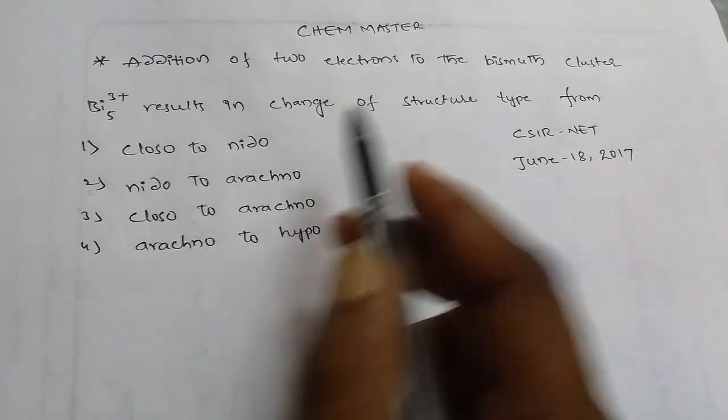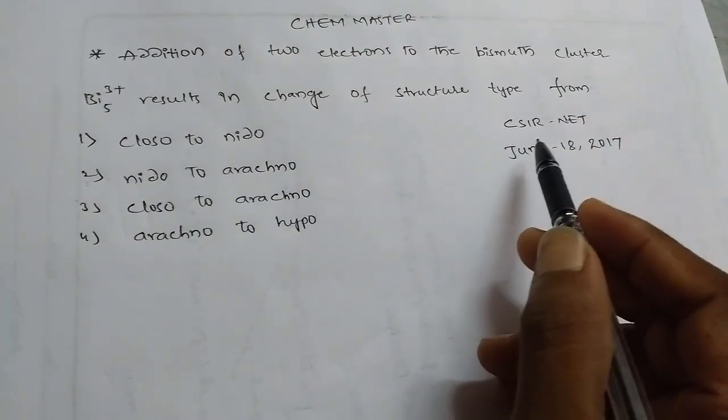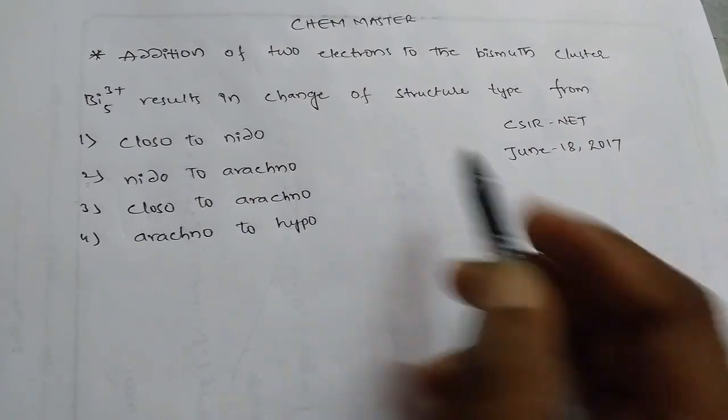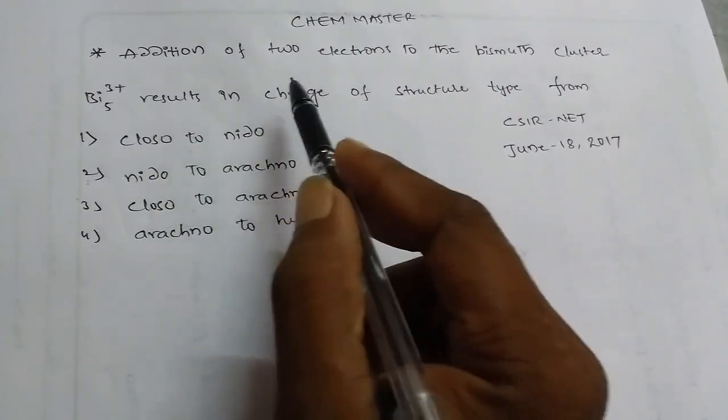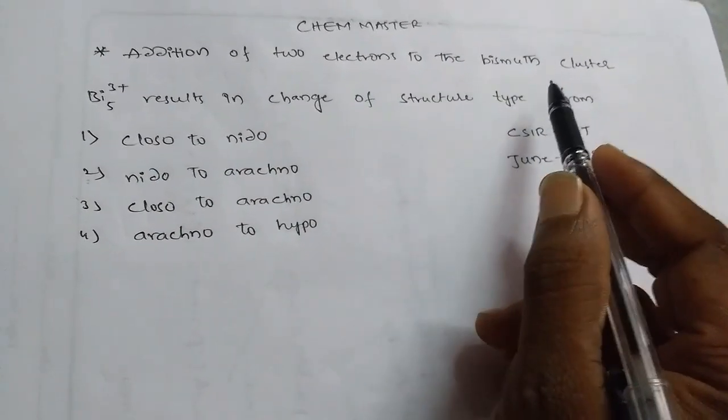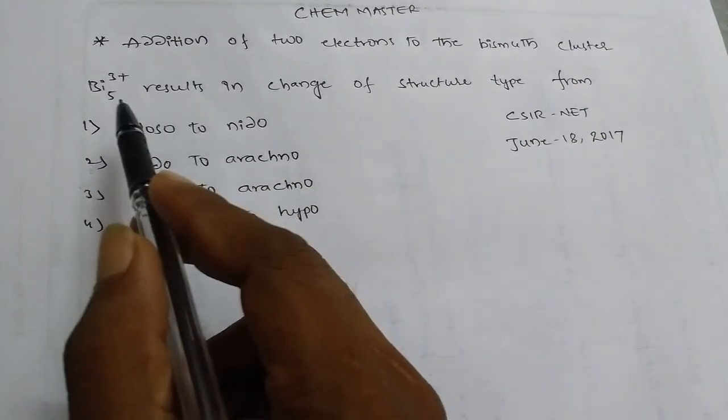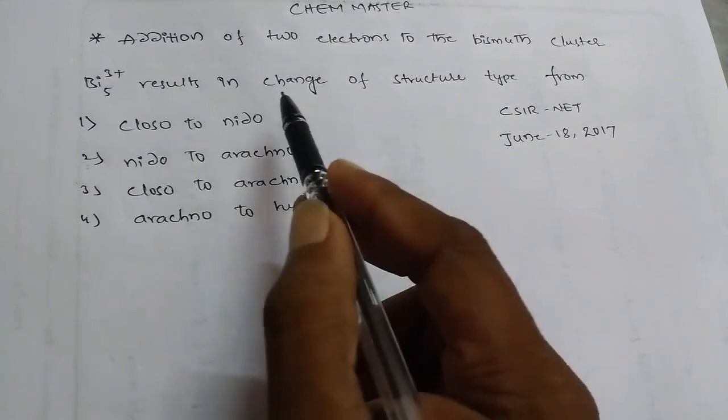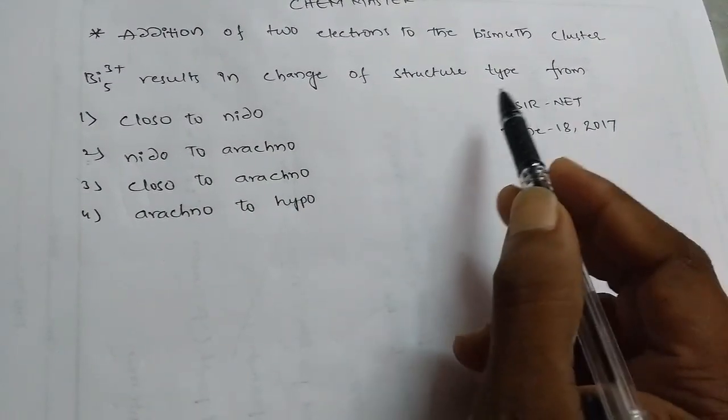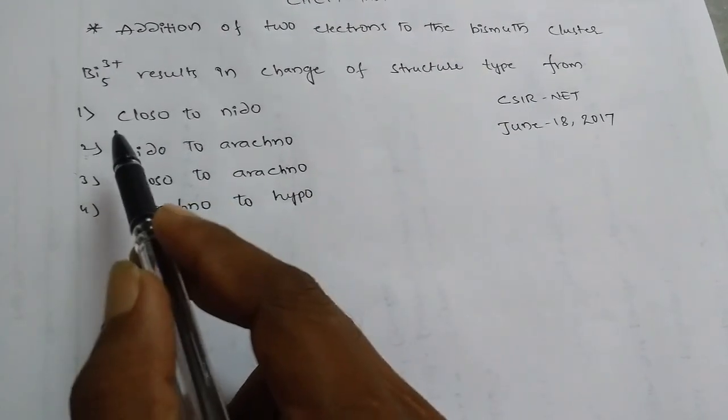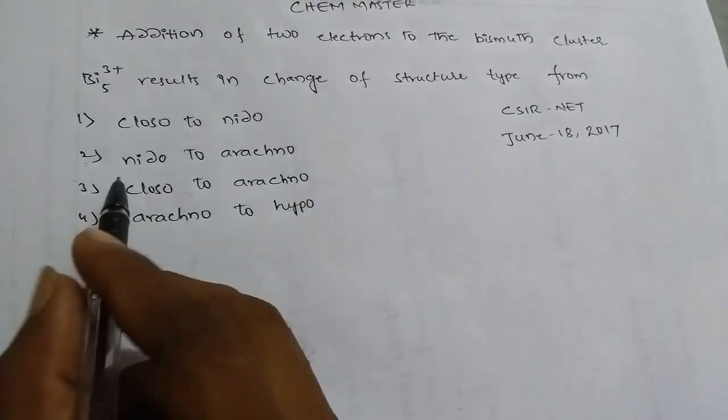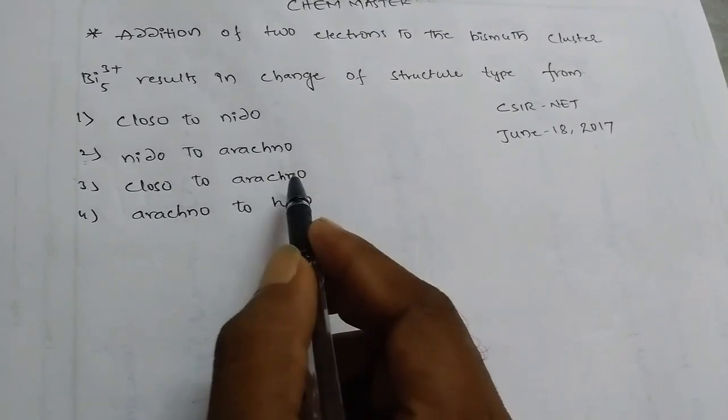Hi, this is your Chem Master. This question appeared in CSIR-NET June 18, 2017. The question is: addition of two electrons to the bismuth cluster Bi₅³⁺ results in change of structure type from... We have four options: first one is closo to nido, second one is nido to arachno, third one is closo to arachno, and fourth one is arachno to hypo.